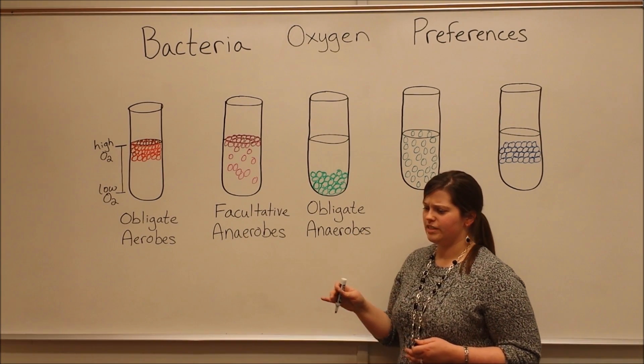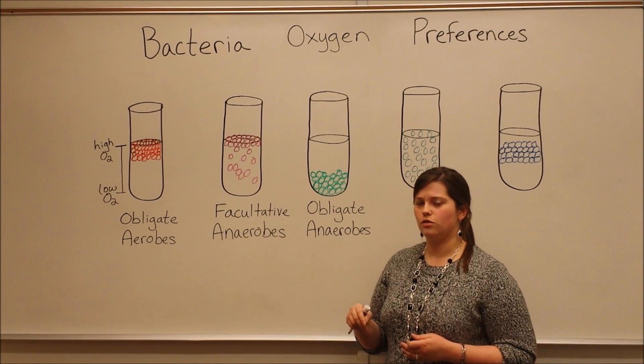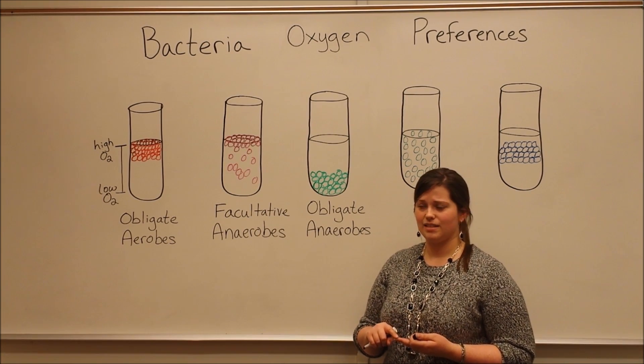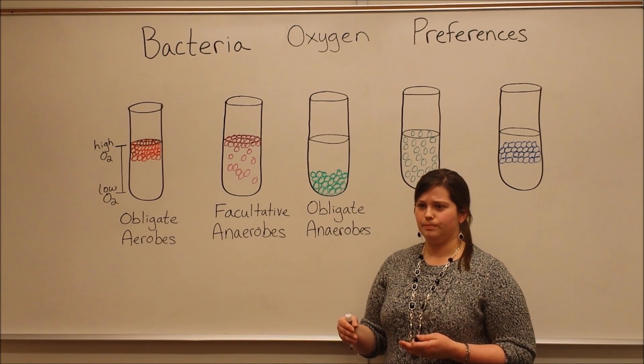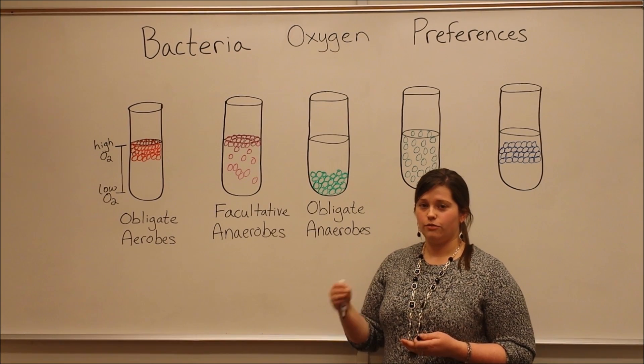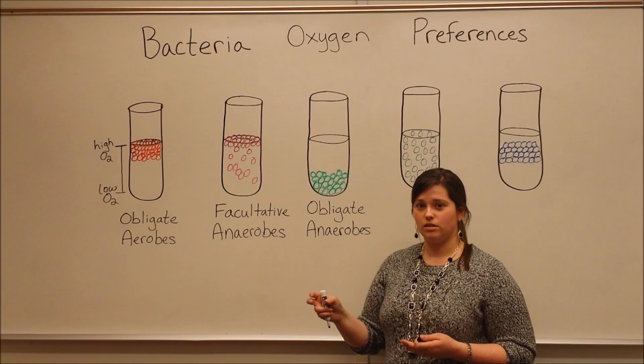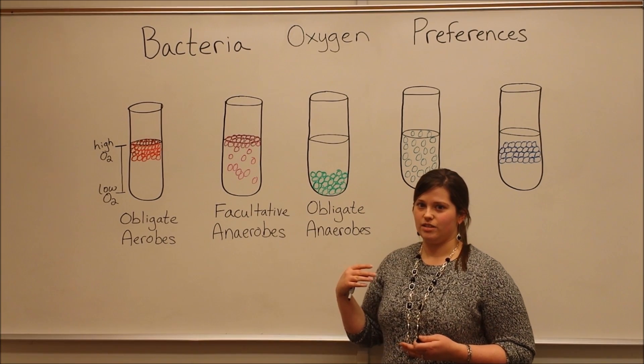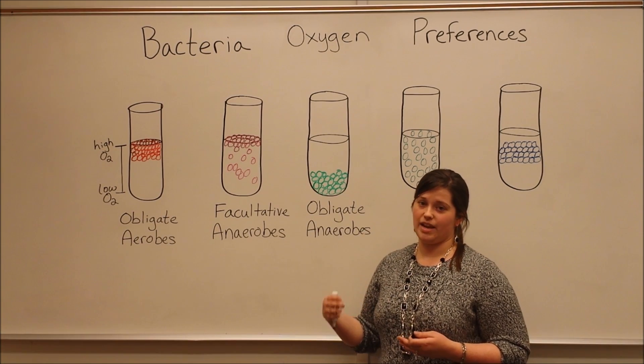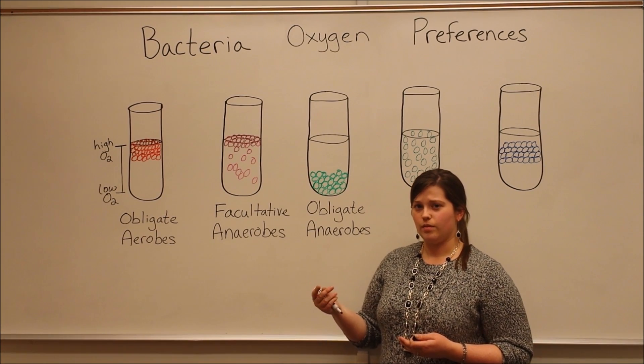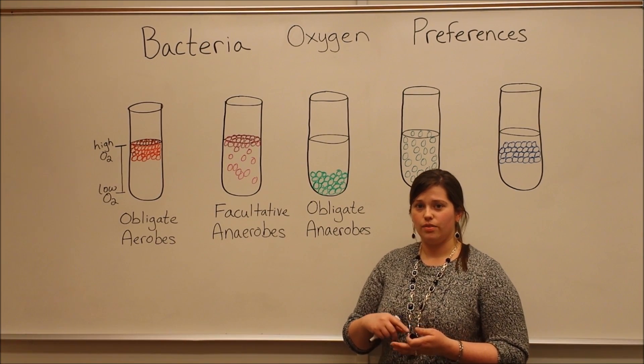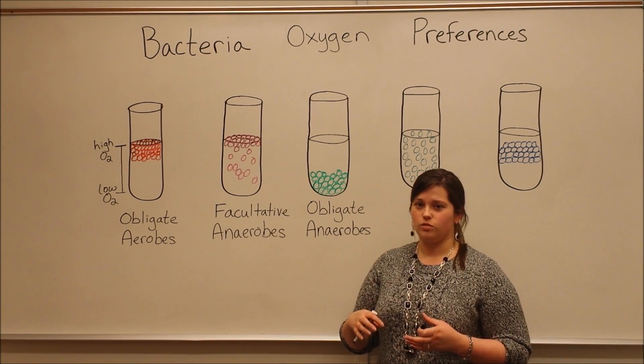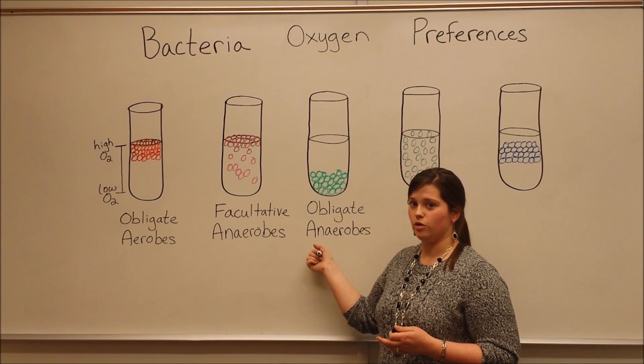An example of an obligate anaerobe would be different kinds of Clostridium species. So for example, Clostridium botulinum, which causes botulism, and Clostridium tetani, which causes tetanus. This makes sense as well, because if you think about when people get botulism, it's often from ingesting food that was not prepared properly that's been sealed. So it's been in a can where there's no oxygen. And then once you eat them, they enter into this oxygen-depleted condition where they're able to germinate and begin to grow. It's the same thing with tetanus. If you get stabbed by a rusty nail, those bacteria are able to penetrate so deeply into your skin, they get into parts of the tissue that don't have much oxygen, and that's where those obligate anaerobes are able to grow.